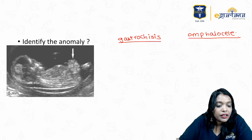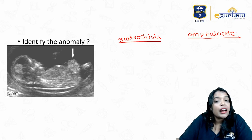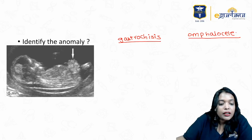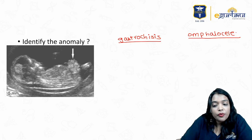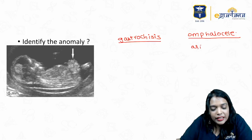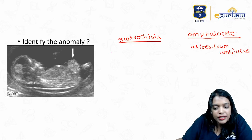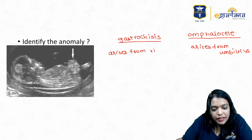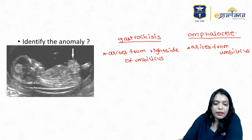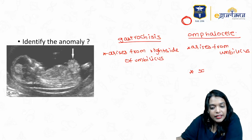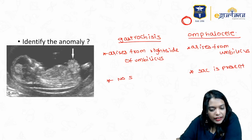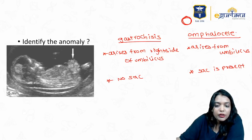So how are you going to differentiate between gastroschisis and omphalocele? Remember guys, 'O' looks like umbilicus — omphalocele arises from the umbilicus, whereas gastroschisis arises from the right side of the umbilicus. Next, 'O' is a complete circle — so omphalocele has a sac present, whereas gastroschisis has an opening and no sac.